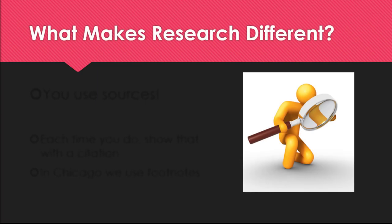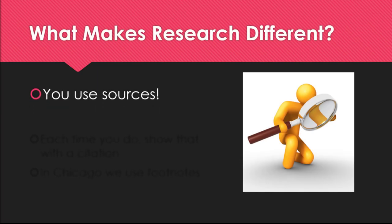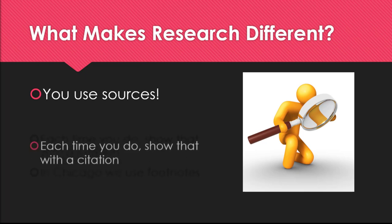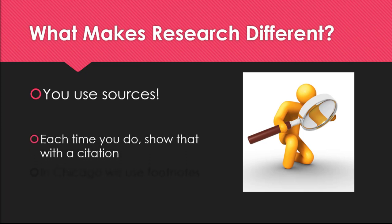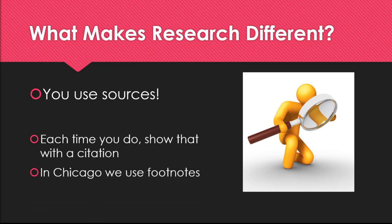The main thing that separates a research paper from another type of assignment is that you should be using sources throughout the paper to back up your statements. Each time you do this, you need to indicate that you're using someone else's work to avoid plagiarism. In Chicago style, you show this with the use of a footnote.